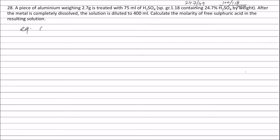Equivalents of aluminium = equivalents of sulphuric acid = weight of aluminium (2.7 g) divided by equivalent weight of aluminium, which is 27 divided by 3. Here 27 is the atomic weight of aluminium and 3 is the valency factor, giving 0.3 equivalents. Therefore, equivalents of sulphuric acid that reacted with aluminium = 0.3 equivalents.